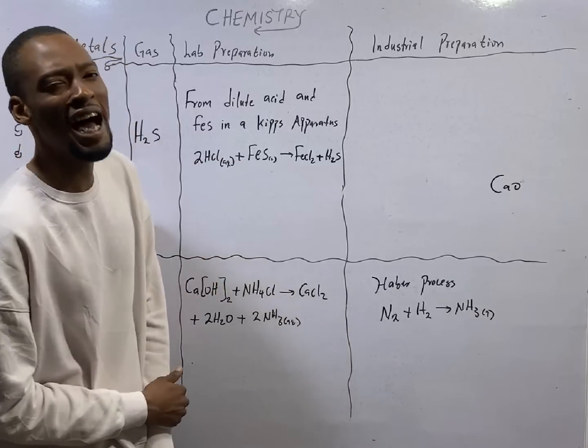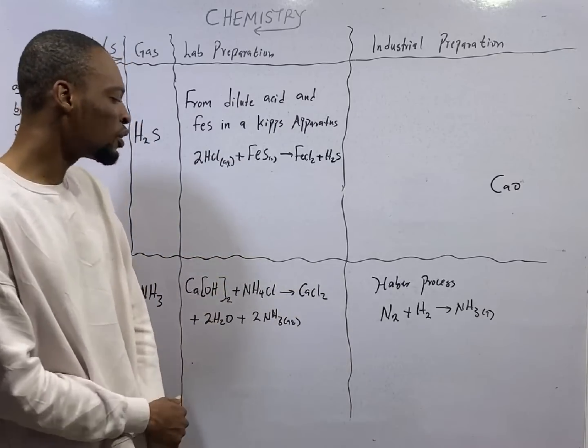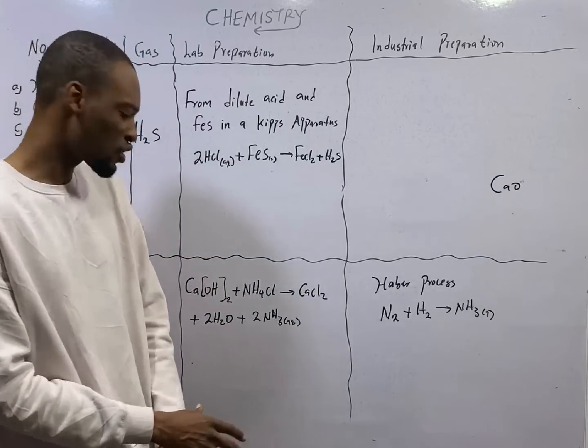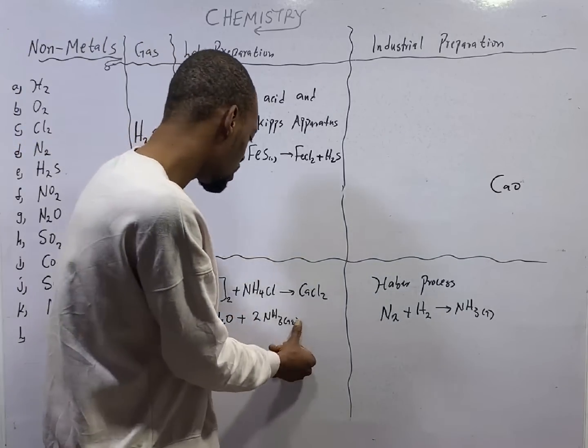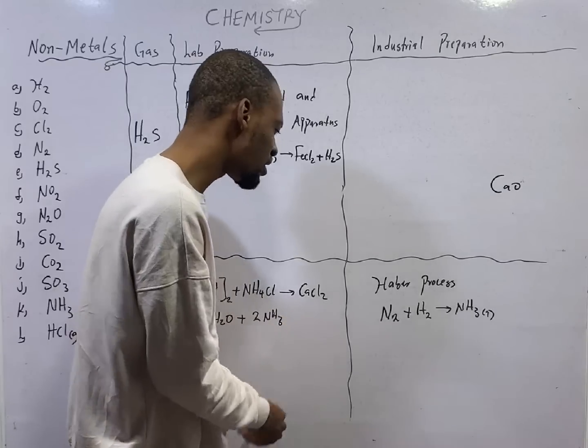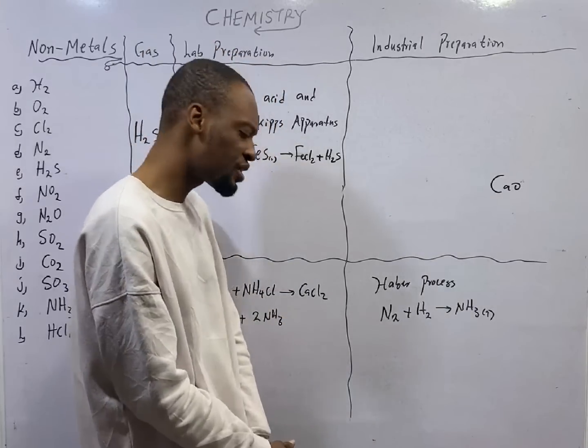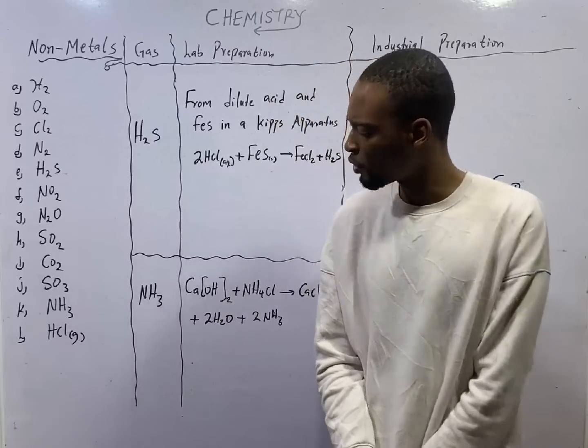When slaked lime reacts with ammonium chloride, we will get calcium chloride, we will get water, and ammonia gas will be produced. Ammonia is given off. This is the laboratory preparation of ammonia.